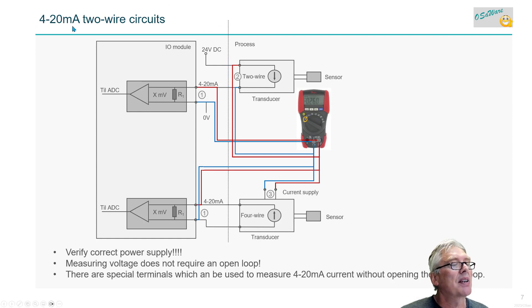Then we have this 4-20 milliamps - it's a legacy signal that's still used quite a bit. They are usually two wires. You have the sensor here, the I/O module automation device. You can measure here on the sensor itself - there should be voltage over here and there because there's a resistor sitting in here.